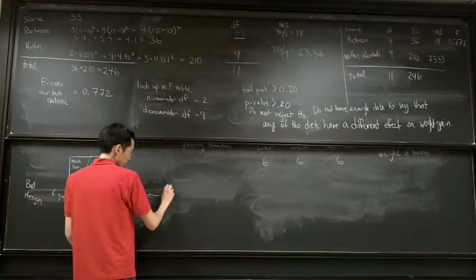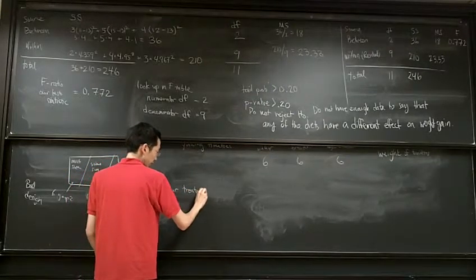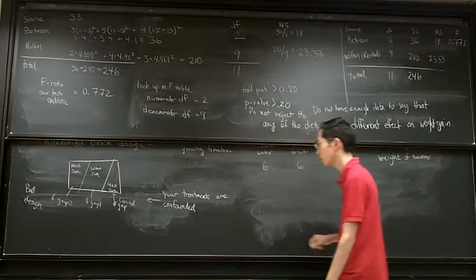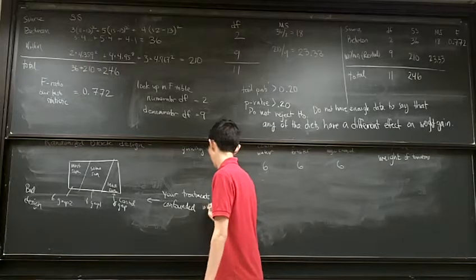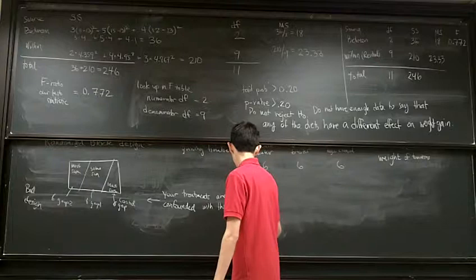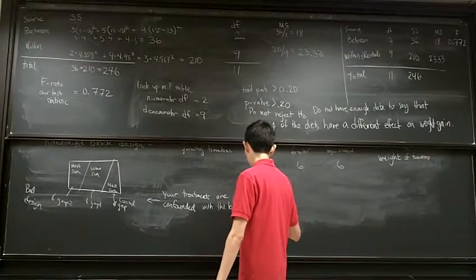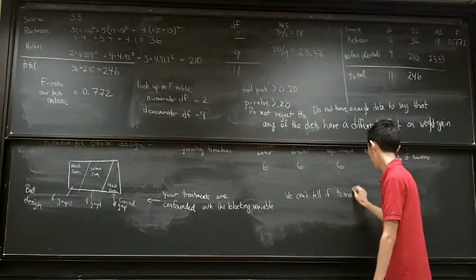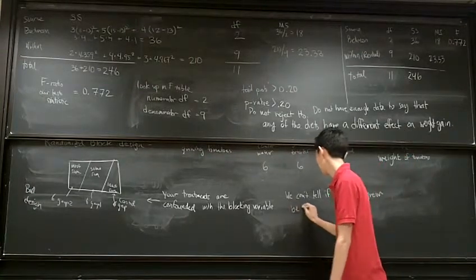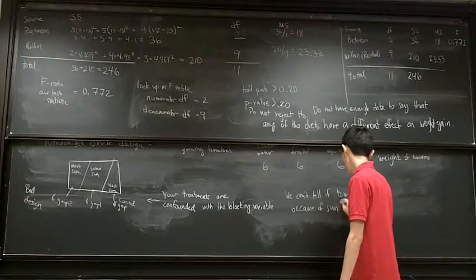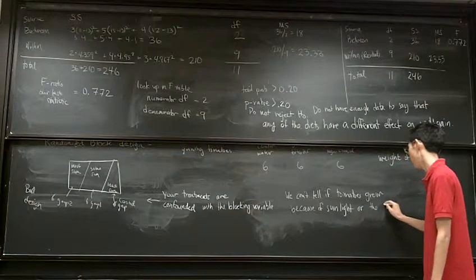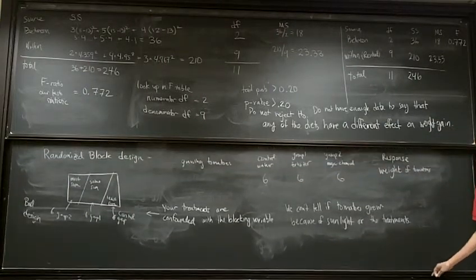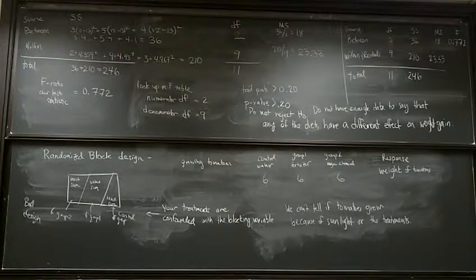So, what would happen here is that your treatments are confounded. That's the technical term for mixed up with the blocking variable. You won't know, but you can't just tell the tomatoes grew. That's the technical term for mixed up with the blocking variable. Right. Right. They would not be in the environment because of sunlight. Or the treatments. So, that would be a bad design.